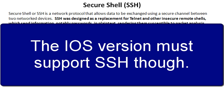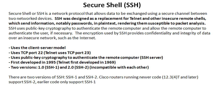By default on Cisco devices, the client portion runs without any configuration. SSH is going to use TCP port 22, while Telnet uses TCP port 23. SSH was first developed in 1995, so it's about 15 years old — but compared to Telnet, which was developed in 1969, it's a baby. There are two versions: SSH-1 and SSH-2. They are actually incompatible with each other, and we'll look at this in more detail later in this lesson.